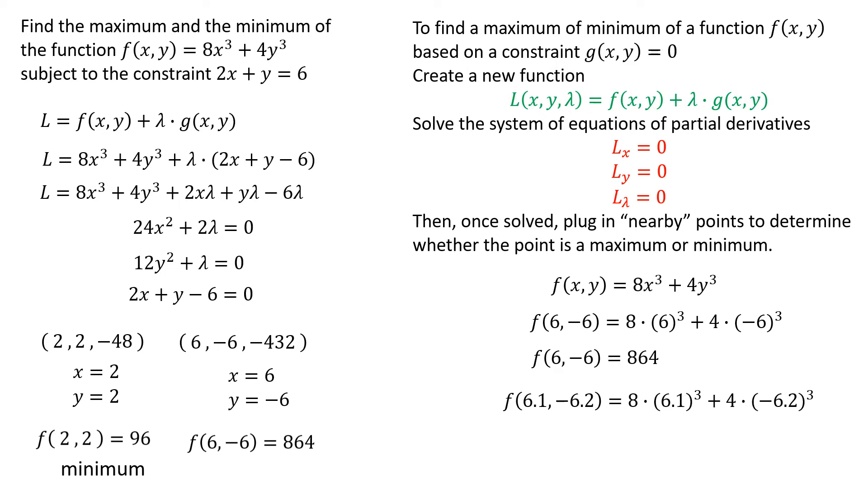If you're wondering where I got these decimals, I randomly picked 6.1 because it was close to x equals 6. I plugged 6.1 into the constraint equation, solved for y, and I got negative 6.2. Once finding a point near my critical point that satisfies the constraint equation, I plugged it into the function, and I got an answer. And you'll notice that answer is a little bit lower than 864. Since it's a little bit lower, it's safe to assume that any point nearby would be slightly lower than this critical point. And wouldn't we then conclude that that critical point is a maximum?